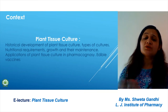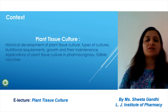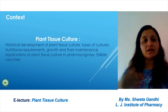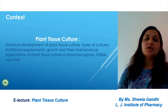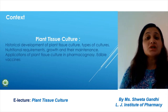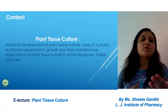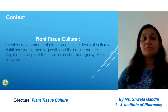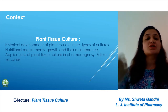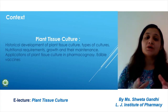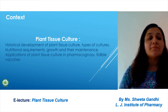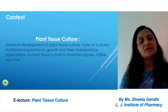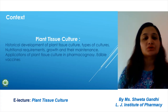In types of culture we are going to learn about the different types like callus culture, suspension culture, organ cultures, anther culture, and flower culture. In nutritional requirements we will learn about the different nutritional requirements of plant tissue culture, because when the plant grows externally it gets nutrition from the environment. But in the lab, we have to provide nutrition in the form of organic, inorganic elements, vitamins, and plant growth regulators.